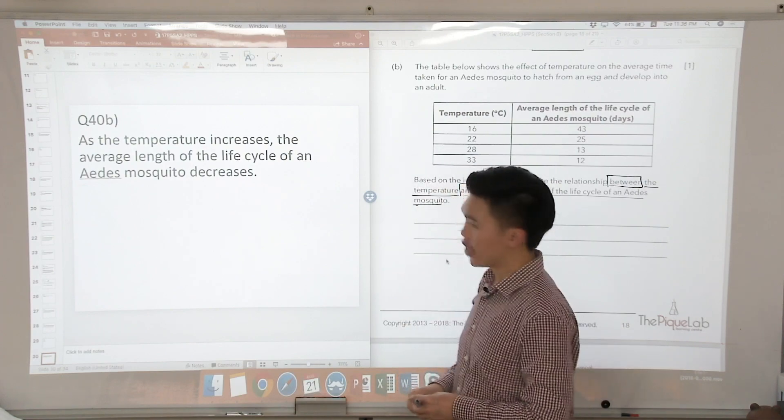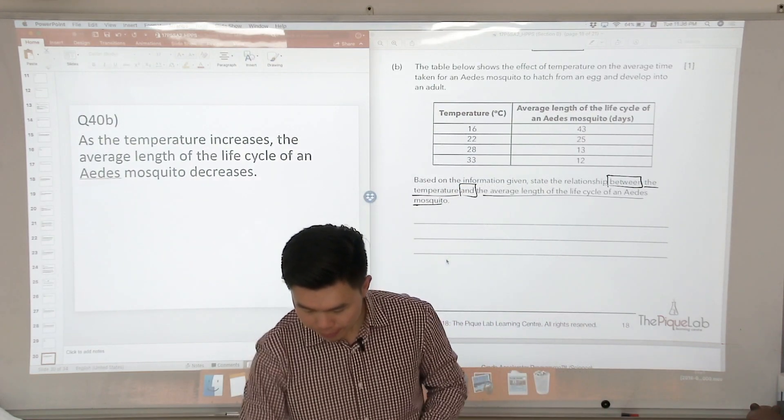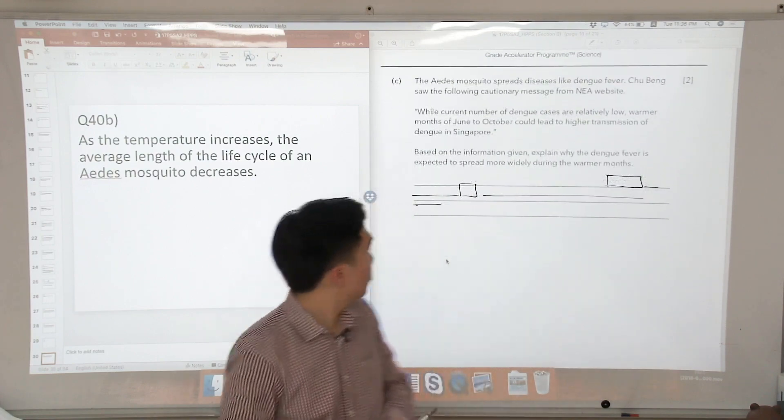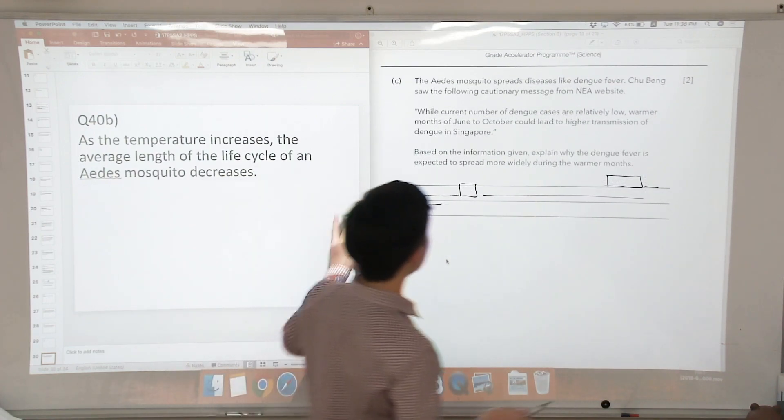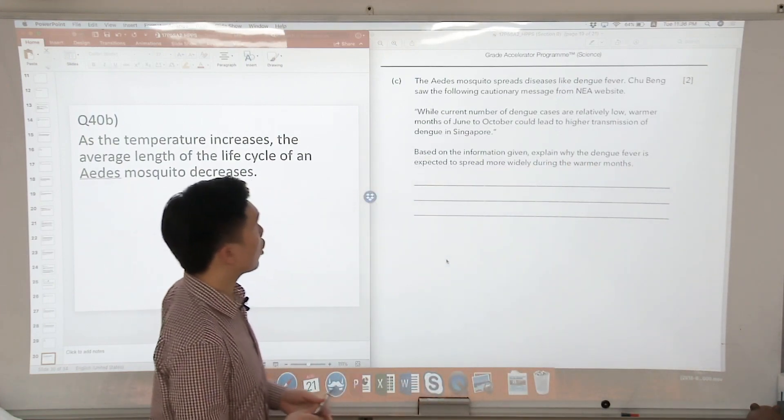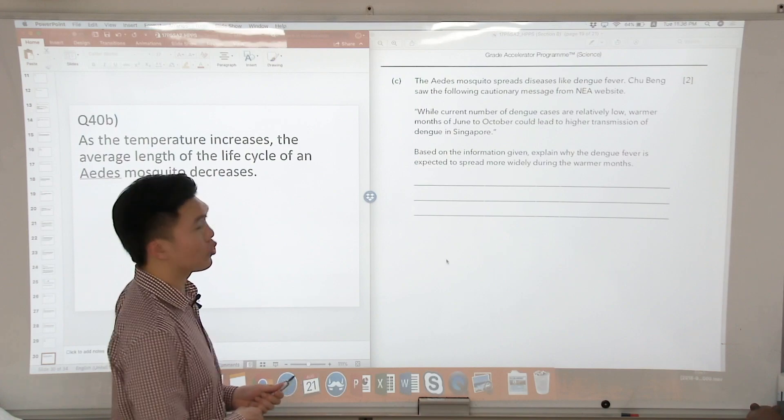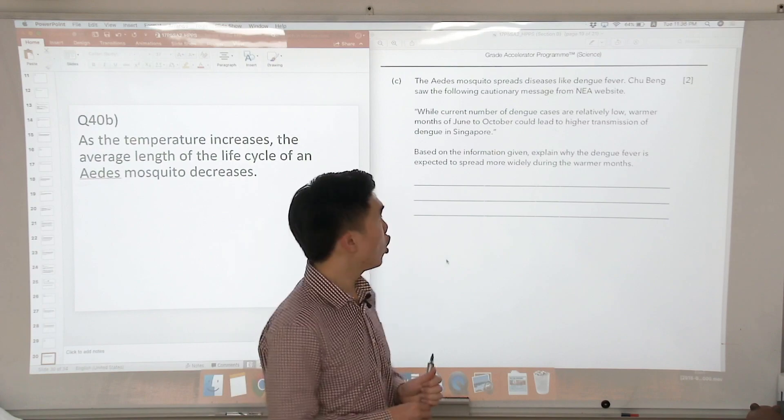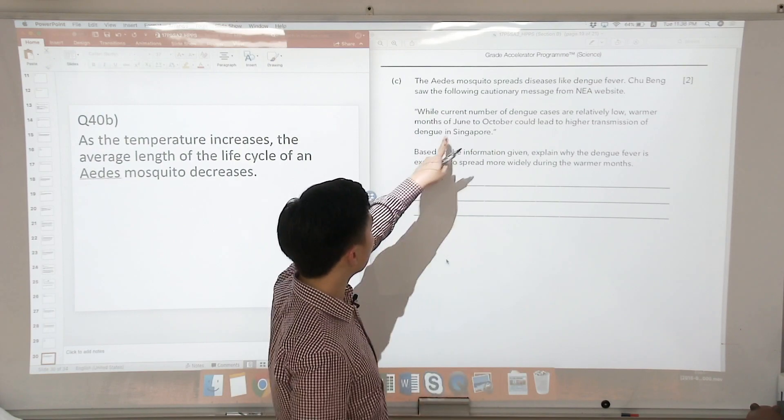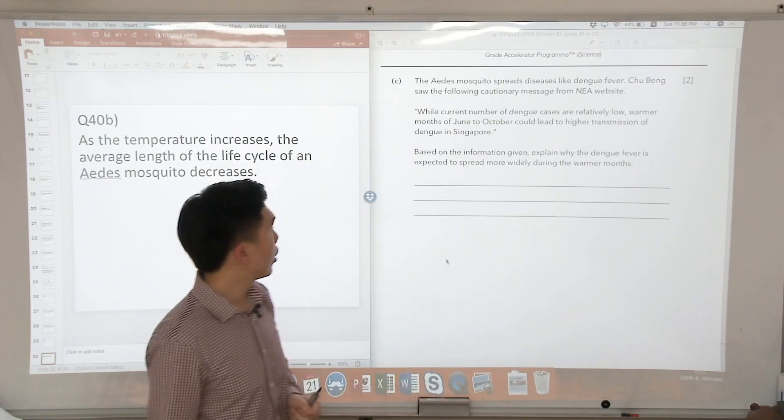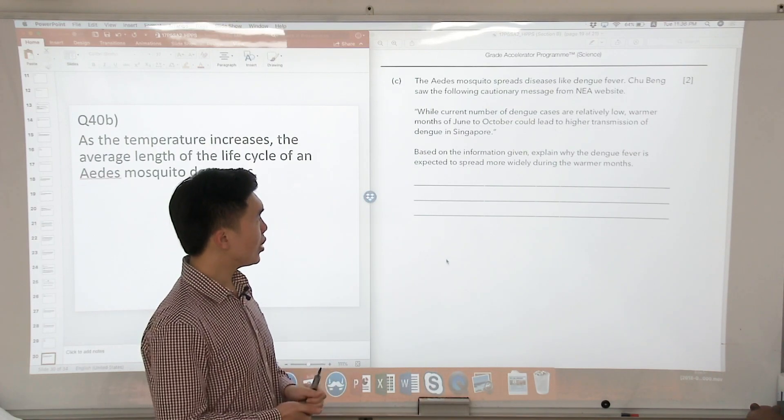Okay, let's move on to the last part, part C. The Aedes mosquito spreads diseases like dengue fever. So Zhubing saw the following cautionary message from NEA website: while current number of dengue cases are relatively low, warmer months from June to October could lead to higher transmission of dengue in Singapore.